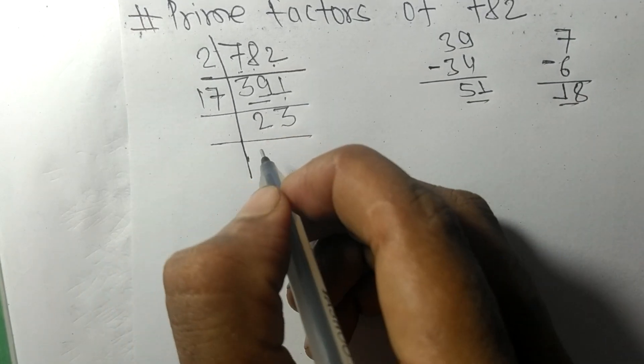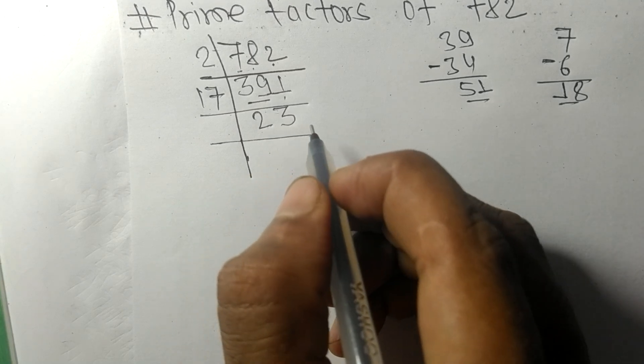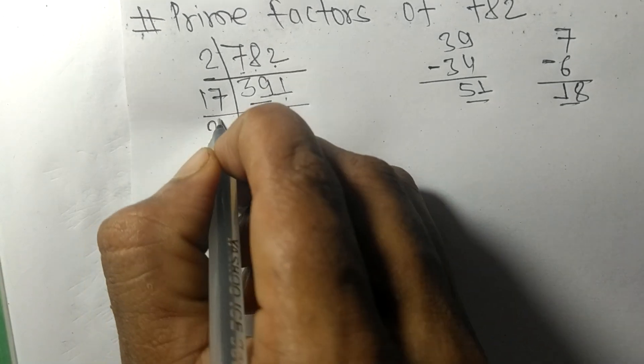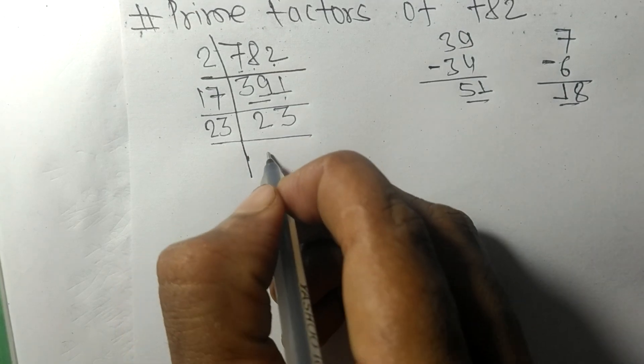Now we got 23, which is our prime number. So it is exactly divisible by 23 only, and on dividing we get 1.